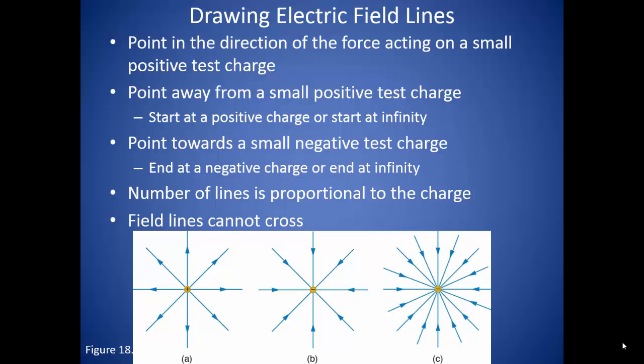So for example, in diagram B, there are 8 lines. If we say this represents 32 nanocoulombs, then diagram C would represent 64 nanocoulombs, because it has twice as many field lines.